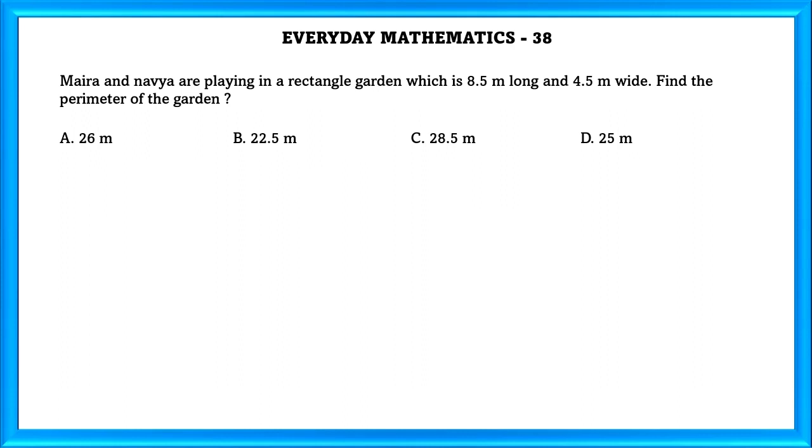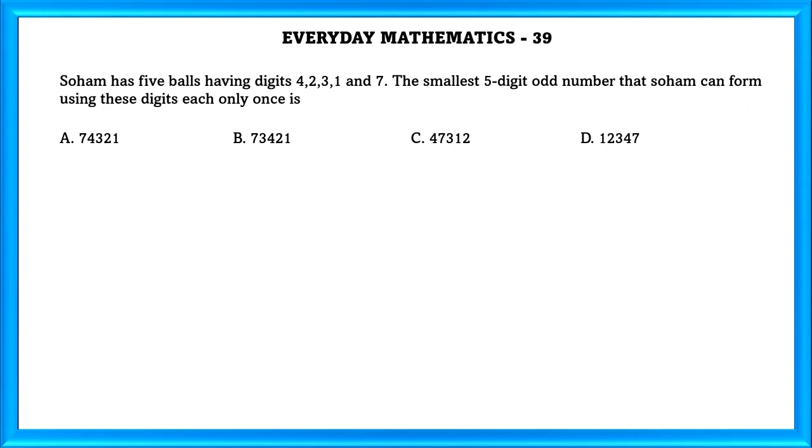Question Number 38: Miara and Navya are playing in a rectangular garden which is 8.5 meter long and 4.5 meter wide. Find the perimeter of the garden. Perimeter of a rectangle, that is the garden, equals 2 times L plus B. As we substitute the values: 2 times 8.5 plus 4.5 which equals 26 meters.